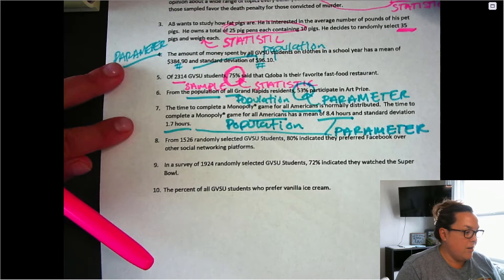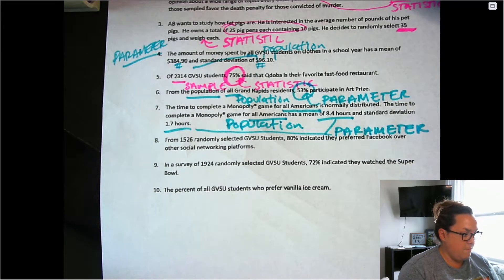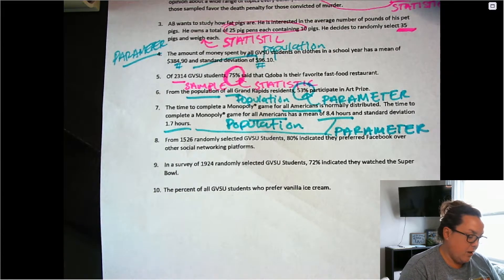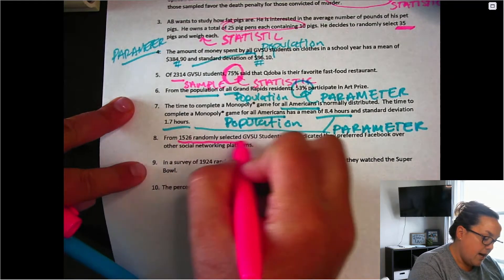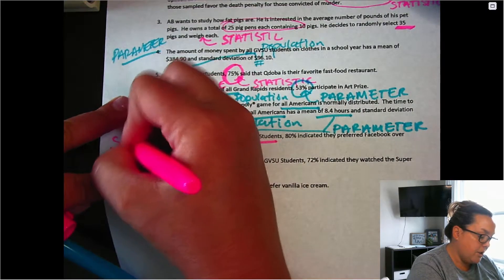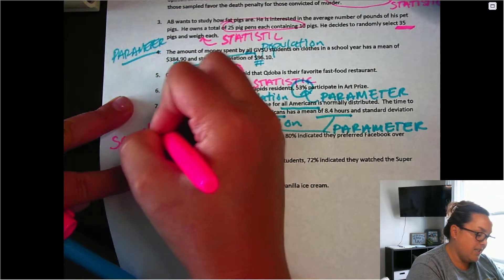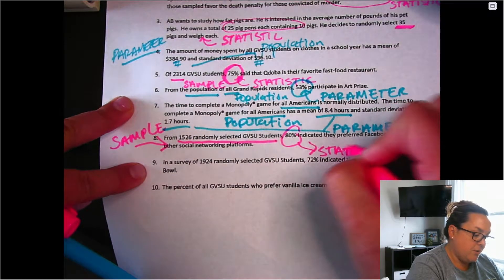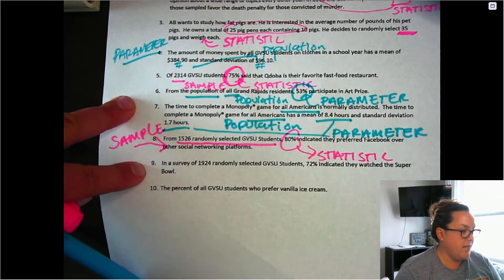So then we have 1,526 randomly selected GBSU students. That is a smaller number than the entire population. So this would be a sample, which means this 80% because it's referring to a sample is called a statistic.